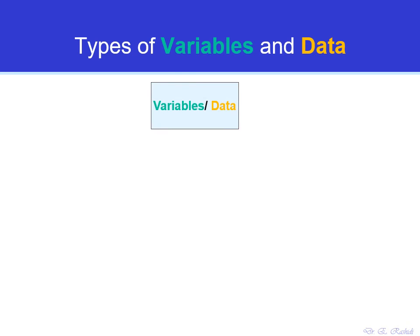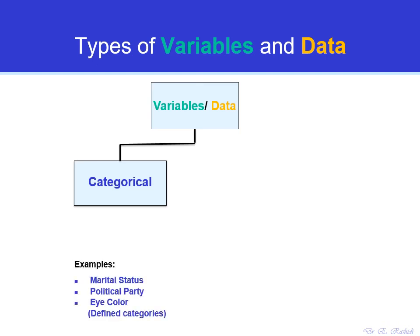In statistics we have different types of variables and data. We have what is called categorical variables, such as marital status — one can be single or married — political party, or eye color. These are defined categories that cannot be represented by numbers. Other examples include a student's major: economics, management, finance, marketing, MIS, or any other major. These are categories that cannot be represented by numbers.